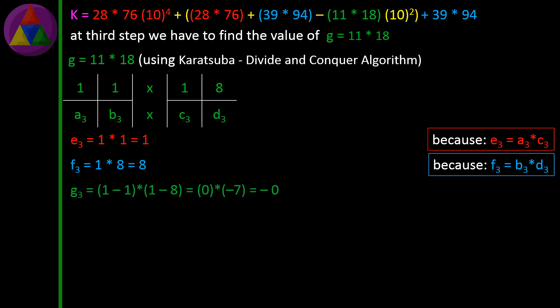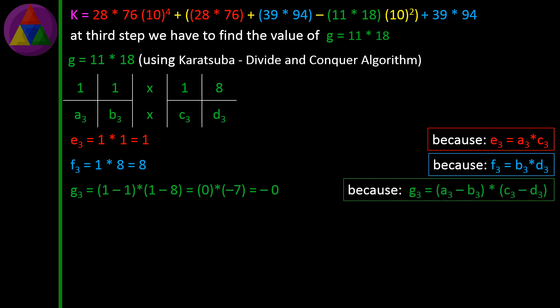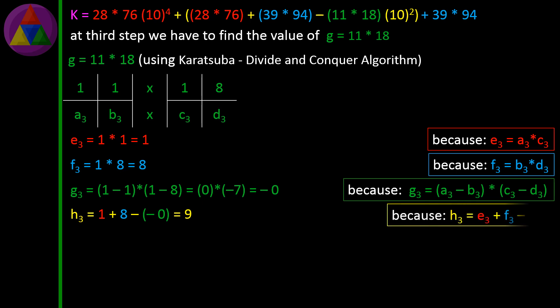G3 = (1−1) × (1−8) = 0 × (−7) = 0, because G3 = (A3−B3) × (C3−D3). H3 = 1 + 8 − (−0) = 9, because H3 = E3 + F3 − G3.